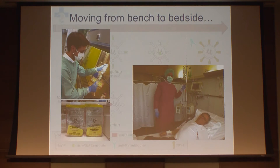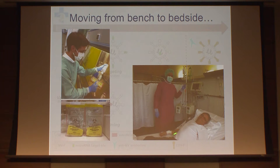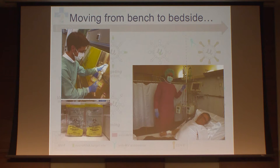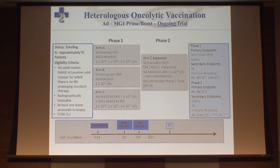Moving to translational aspects: two years ago in Germany, only 20 patients had been treated in that country with oncolytics. We treated patient number 21 — the first patient to receive the poxvirus vaccinia virus TK594, generated by Genelux, the company from John Bell in Canada. We treated hepatocellular carcinoma patients, administering the virus intra-lesionally in the liver lesions as well as systemically.